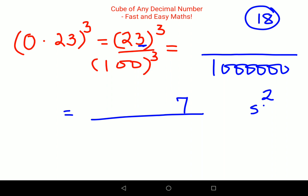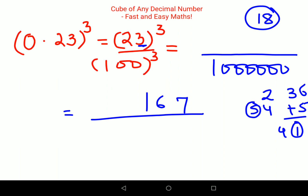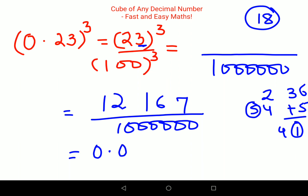3 into 18 gives 54, and adding carry 2 gives 56 — so we write 6 and carry 5. Then multiply 2 by 18 to get 36, add carry 5 to get 41 — write 1 and carry 4. Then 2 cube is 8, plus carry 4 gives 12. So the cube of 23 is 12167. Since we divide by 1 followed by 6 zeros, and the answer has 5 digits, the final answer is 0.012167.